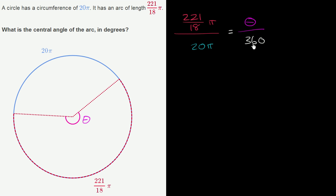Now we just have to simplify. The easiest thing is just to multiply both sides times 360 degrees. So let's do that. If we multiply the left-hand side by 360 degrees, we get 360 times 221 times π over, let's see, we have 18 times 20 times π.